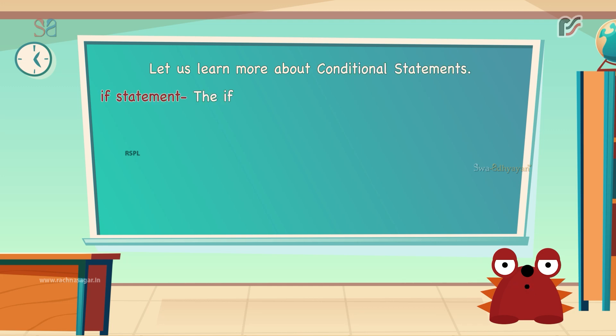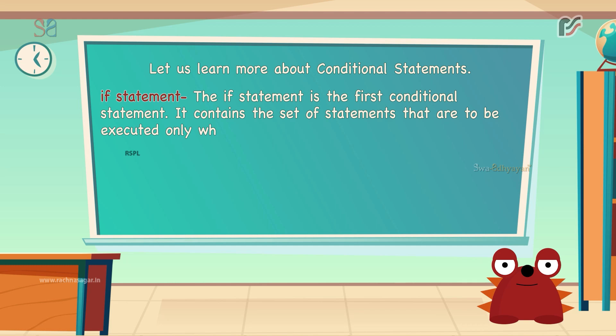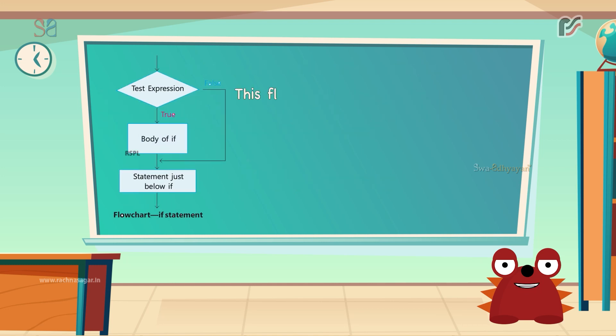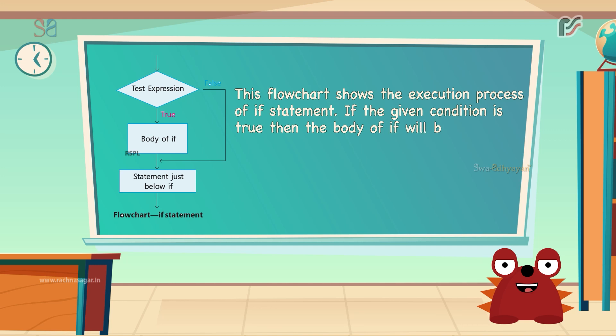The if statement is the first condition statement. It contains the set of statements that are to be executed only when the condition is true. Here is the syntax: if condition, body of if. This flowchart shows the execution process of the if statement. If the given condition is true, then the body of if will be executed. If the given condition is false, then the body of if will not be executed.